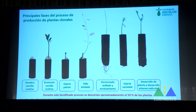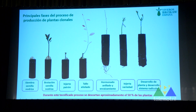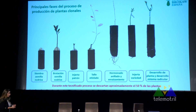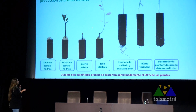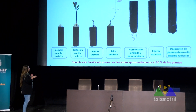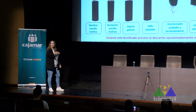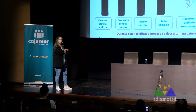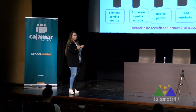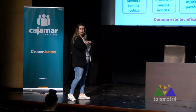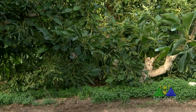Esto está resumido, pero como podéis imaginar son muchas fases y muchas personas encima de cada planta todos los días: si sale un tallito hay que quitarlo, si la semilla no provee suficiente energía se descarta, si una púa falla se quita también. Hay muchas fases.